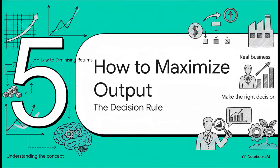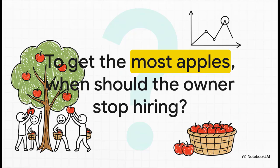This brings us to the big payoff: how to maximize output. The decision rule. We've got the concept, we've seen the numbers. So how does an actual business owner use this to make a smart call? The question is simple: when should the orchard owner stop hiring people? Let's be super clear about the goal for right now. We're not thinking about profit yet. We're not paying anyone. We have one single goal: get the absolute maximum number of apples into baskets.